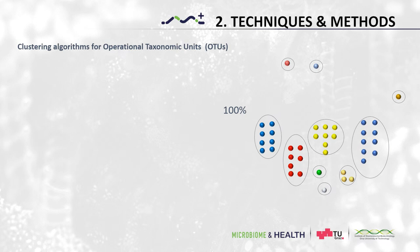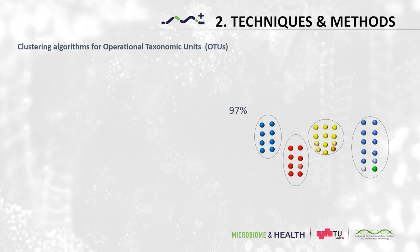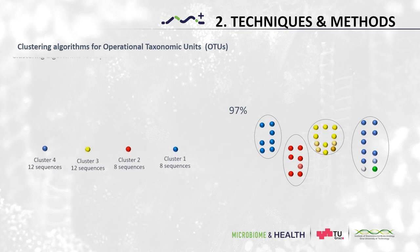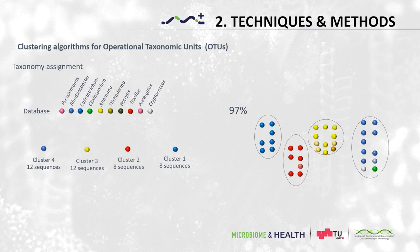Instead, if we reduce the similarity to, let's say, 97 percent, different shades of the same color or very similar sequences will cluster together. We also record the number of sequences inside each cluster, which gives us the abundance or frequency of OTUs. We can then take only one sequence per cluster — because they are all identical or very similar — and compare them to a database. Doing so, we can know which microorganisms were present in our sample using a much lower number of sequences.